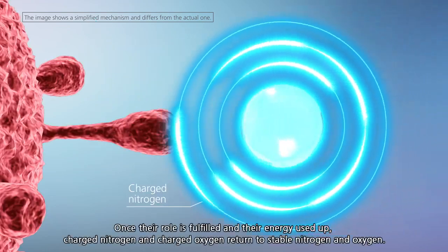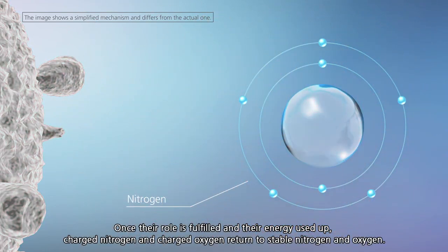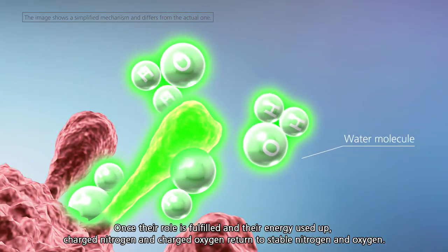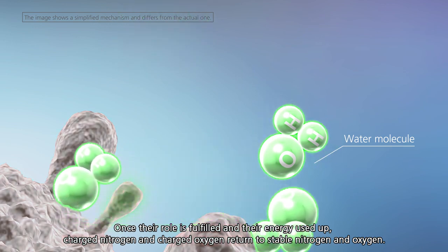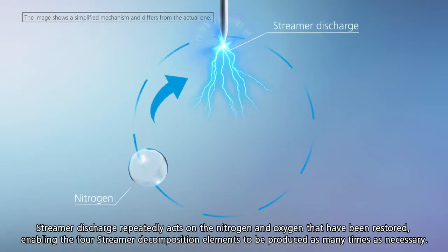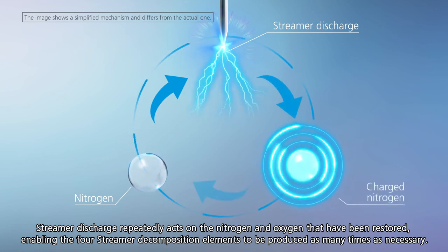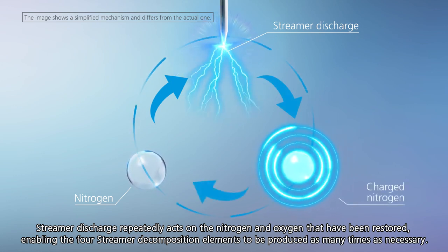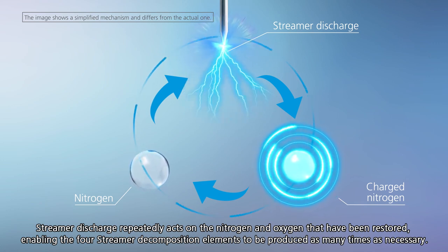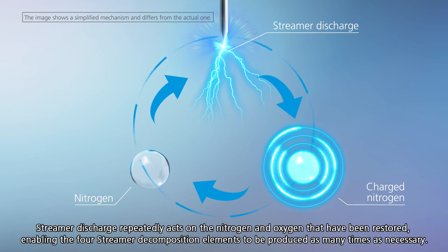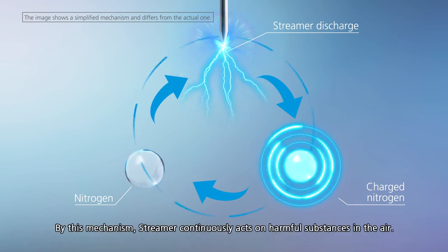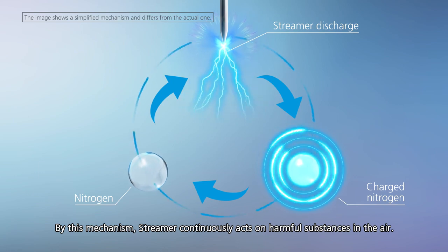Once their role is fulfilled and their energy used up, charged nitrogen and charged oxygen return to stable nitrogen and oxygen. Streamer discharge repeatedly acts on the nitrogen and oxygen that have been restored, enabling the four streamer decomposition elements to be produced as many times as necessary. By this mechanism, streamer continuously acts on harmful substances in the air.